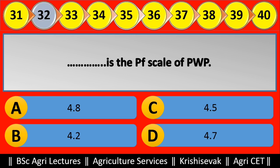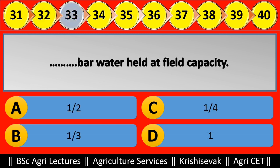Question 32: Blank is the pF scale of PWP (permanent wilting point). Options are: (a) 4.8, (b) 4.2, (c) 4.5, (d) 4.7. Right answer is 4.2, option B. Question 33: Blank bar — water held at field capacity. Options are: (a) 1/2, (b) 1, (c) 1/3, (d) 1/4. Right answer is 1/3, option B.